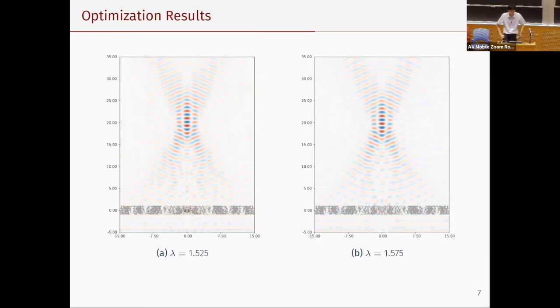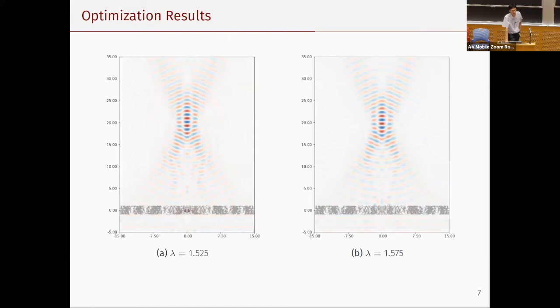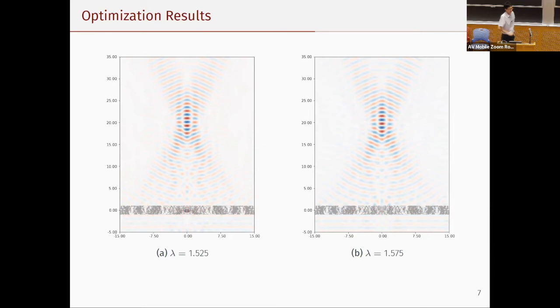For the metal lens with two frequencies — the question was whether this is a broadband optimization or specifically targeted at those frequencies. It's specifically targeted at those two frequencies, so it's guaranteed to work well at them. I haven't tested it at frequencies in between that range.